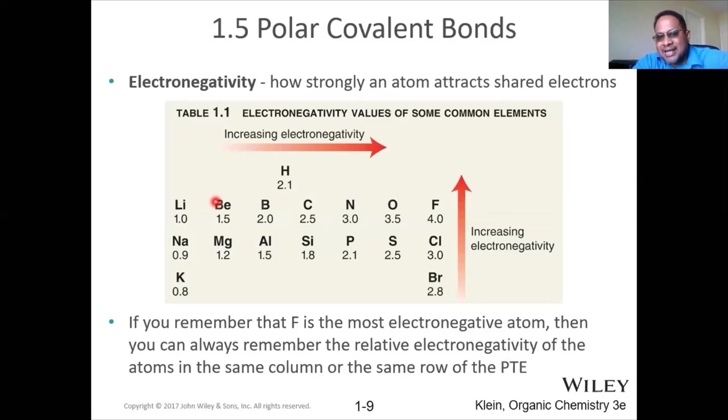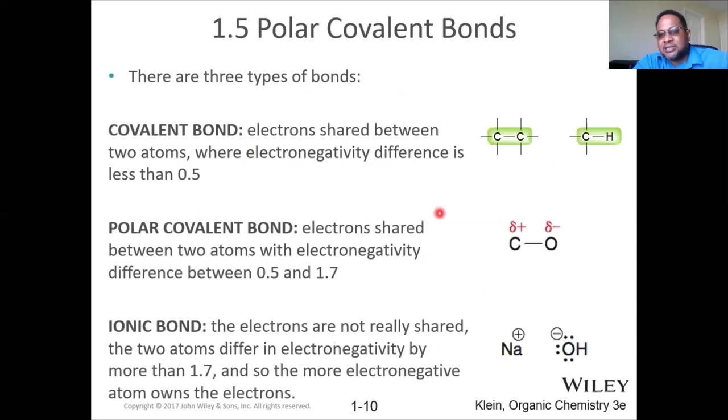So the trend is, as you go from left to right, electronegativity increases. That's because we're increasing the number of protons in your atom. And then as we go from bottom to the top, electronegativity also increases. And why is that important? That is important as it relates to bonding.